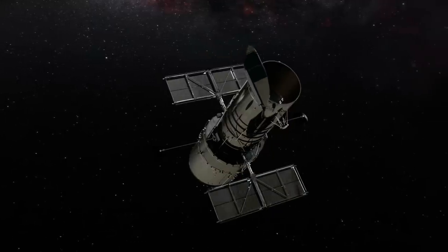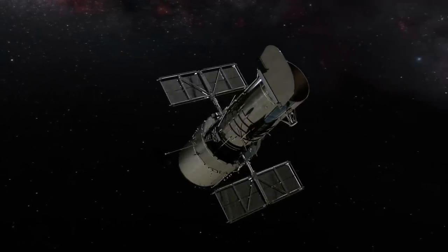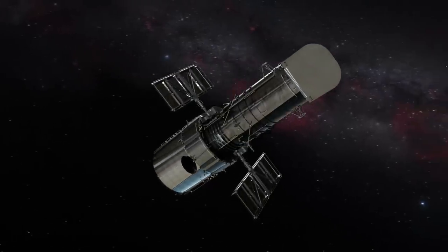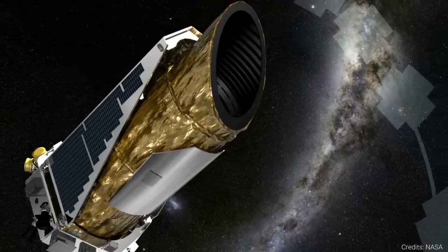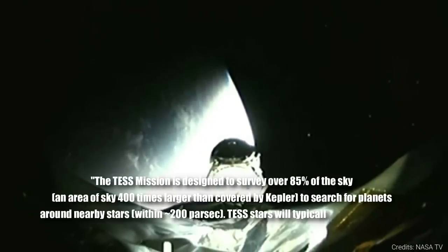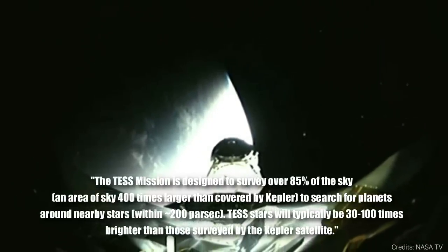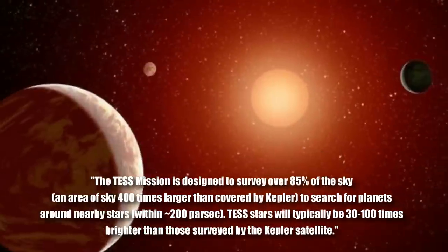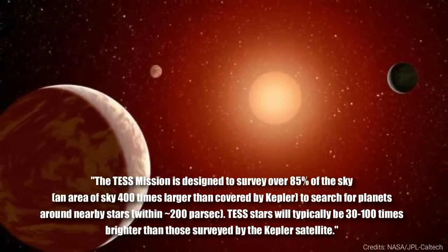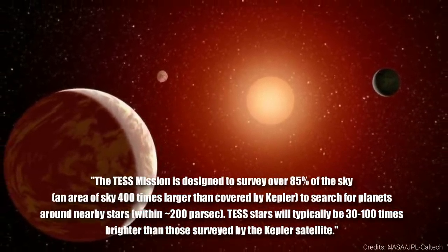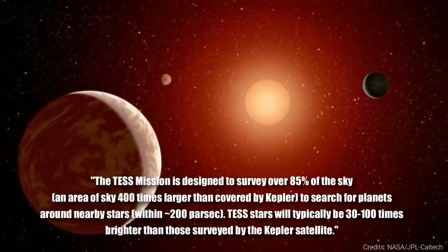It's able to record many different kinds of footage and do it in a range of minutes, if not sooner. One of the big reasons for the creation of this satellite telescope was to be better than the Kepler Space Telescope. The TESS mission is designed to survey over 85% of the sky, an area of sky 400 times larger than covered by Kepler to search for planets around nearby stars within 200 parsec. TESS stars will typically be 30 to 100 times brighter than those surveyed by the Kepler satellite.